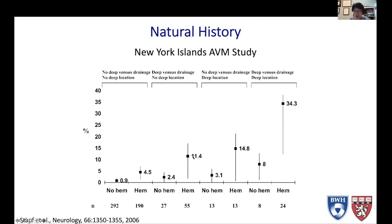However, at the other end of the spectrum, an AVM that is deep in location and has deep venous drainage, even if unruptured, already has an eightfold higher risk of hemorrhage than an AVM that is not deep and has no deep venous drainage. Even more so, an AVM that has previously ruptured, is deep, and has deep venous drainage carries a 34-fold risk of hemorrhage compared to the lowest-risk category.